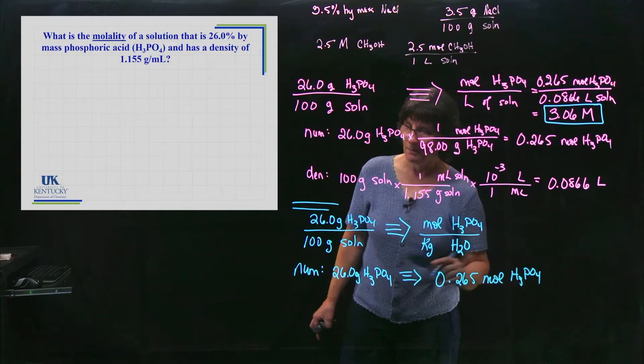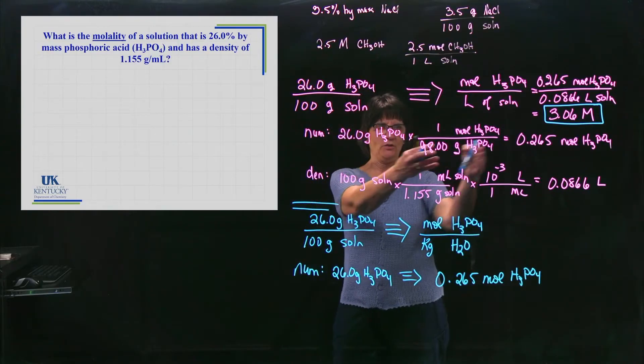If you do all of that work that you see right up here, you're going to have 0.265 moles of H3PO4. No sense doing that again, but if it was a fresh problem, we'd go and do this.